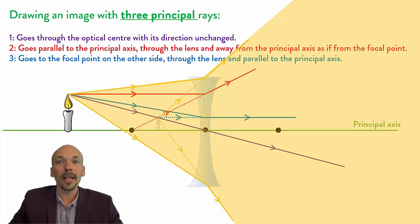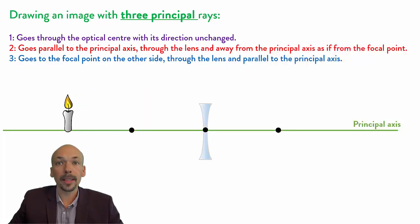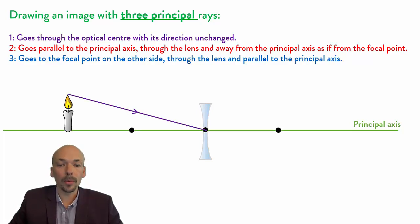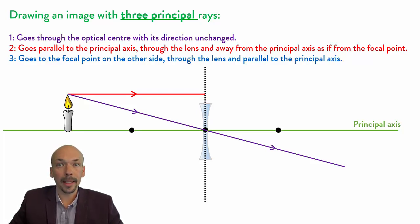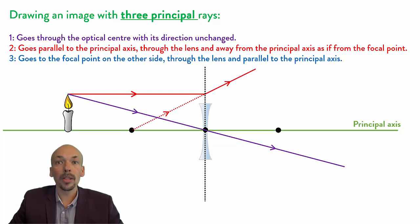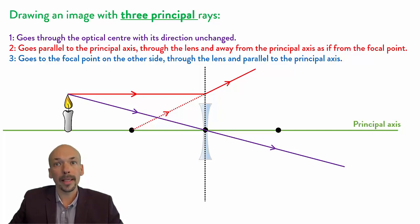Now let's see what happens if the lens is smaller. As you can see, the lens is a bit smaller and we can draw the image with this lens. The first ray will go through the optical center and it will go unchanged. The second one will go parallel to the principal axis, but there it doesn't hit the lens. But as this is a principal ray, you can just make the lens a bit bigger.